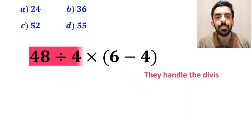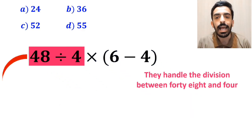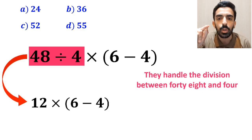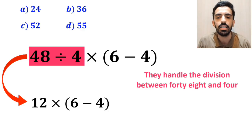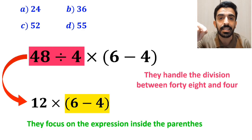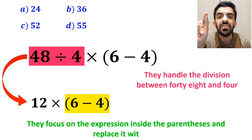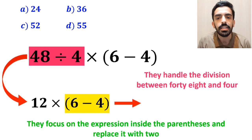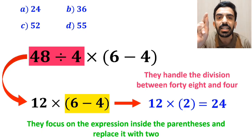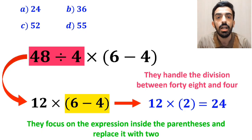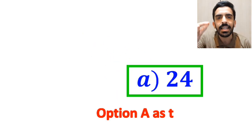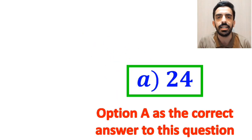Then they handle the division between 48 and 4, and replace this expression with 12 multiplied by 6 minus 4 in parenthesis. In the final step, they focus on the expression in parenthesis and replace it with 2. So this expression becomes 12 multiplied by 2, which equals 24. Then they quickly look at the options and choose option A as the correct answer to this question.